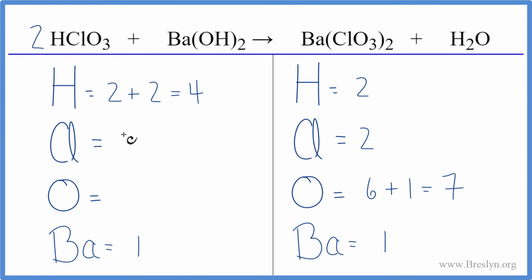One times the two for the chlorines, two chlorines. So those are balanced. Oxygens, three times two, that's six, plus two times the one, two there. So now we have eight, and the barium's the same.